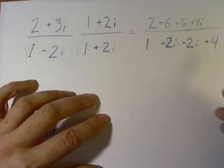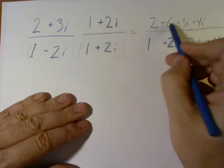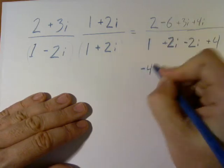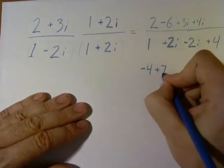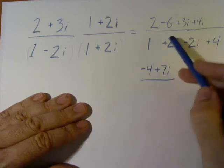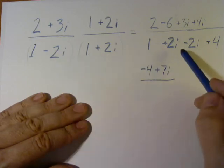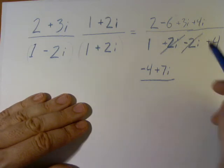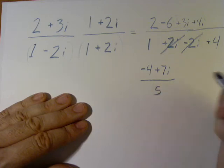This simplifies down quite a bit. The numerator gives us 2 minus 6, which is negative 4, plus 3i plus 4i, which is 7i. For the denominator, notice when we multiply times the complex conjugate, the imaginary part cancels itself out. It's gone. What we're left with is 1 plus 4, simply 5.